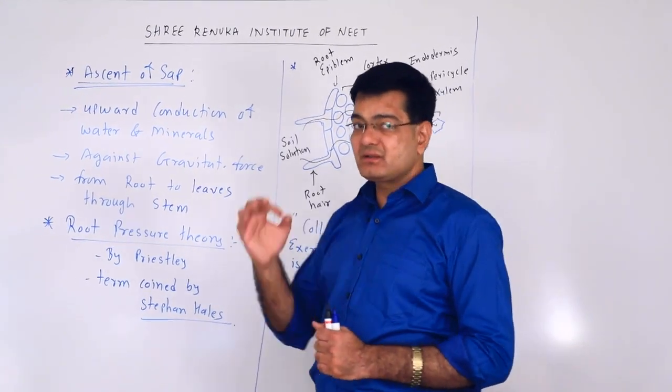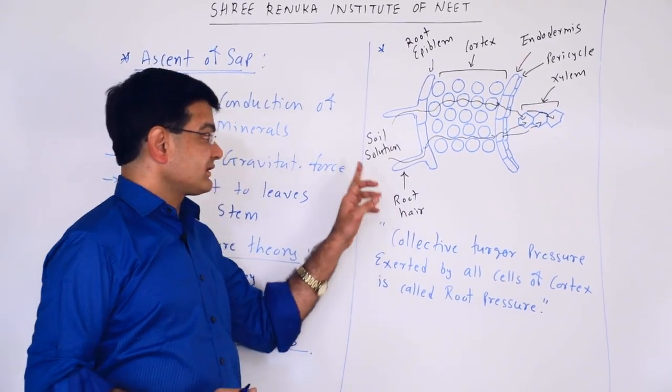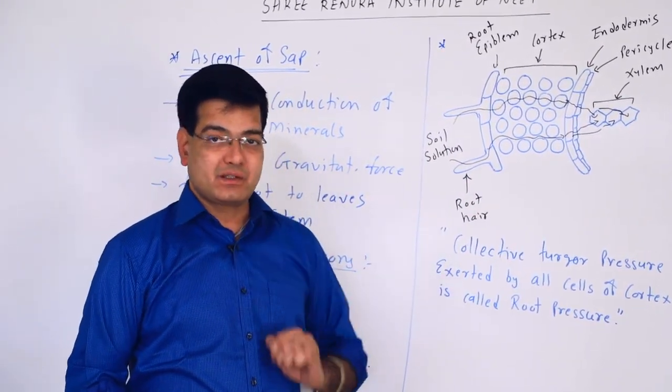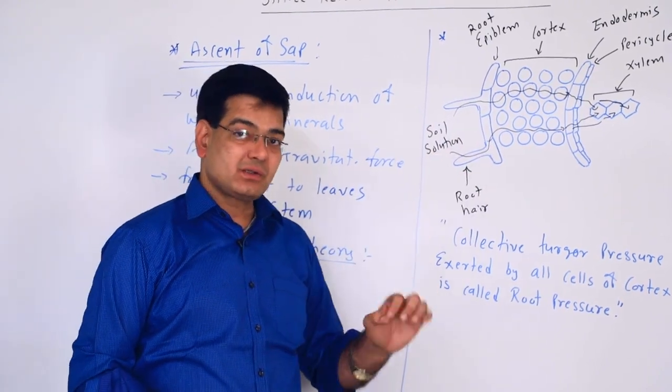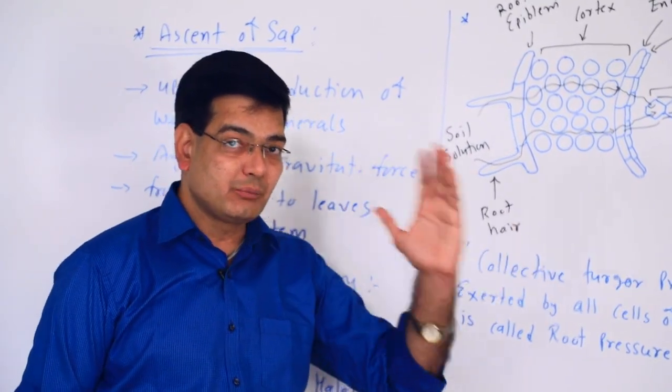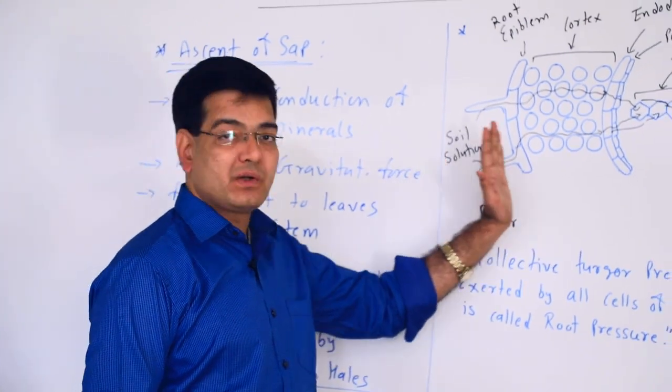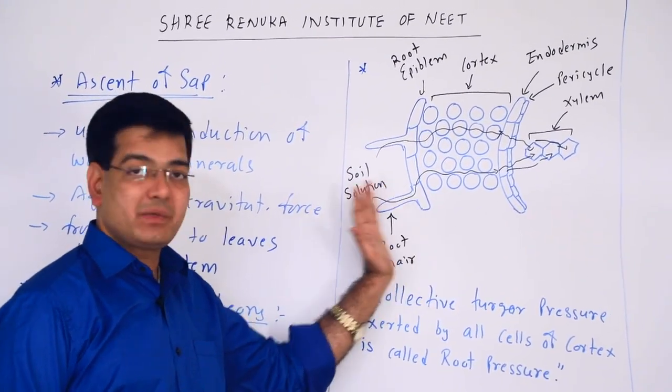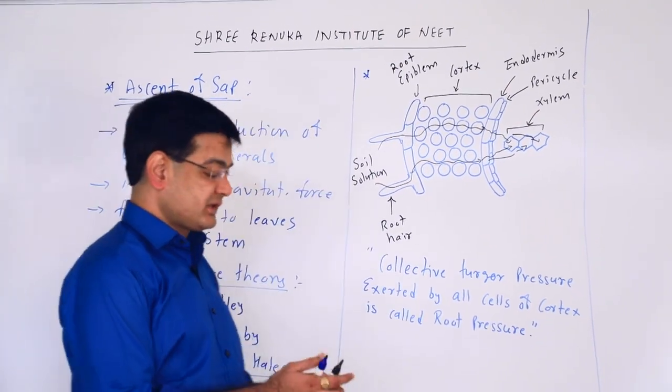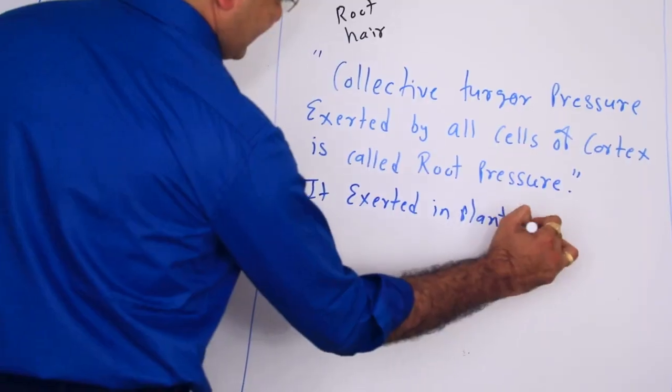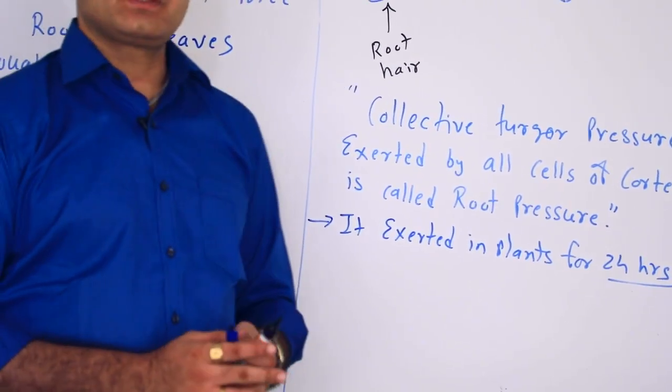Root pressure is a phenomenon which is exerted in the plant for 24 hours. Until there is a difference in concentration, water absorption is always carried out. Soil solution is hypotonic and the cytoplasmic concentration of each cell of the root is hypertonic. Water moves from hypotonic to hypertonic solution, so water is continuously absorbed by the root and root pressure is continuously generated. This is important for ascent of sap.